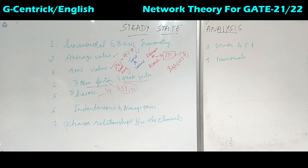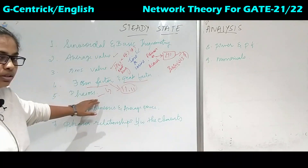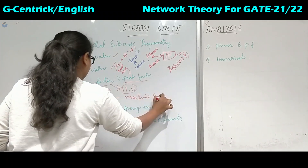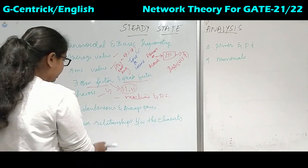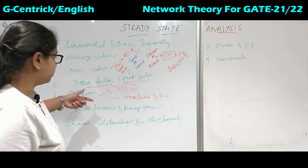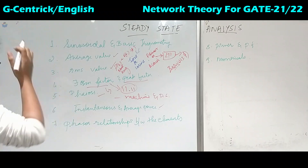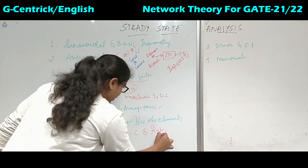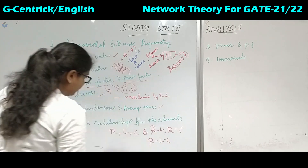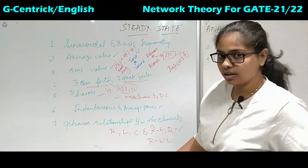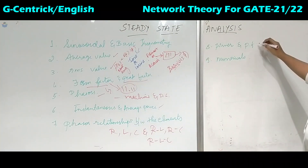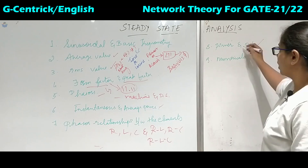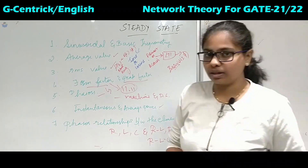The fifth topic is phasors. Once the phasor concept is clear, it will be very helpful for solving problems in machines as well as power systems, because there we will deal with phasors. Next we will see instantaneous and average power — including reactive power, active power, and apparent power. Then we cover the phasor relationship between individual elements — resistors, inductors, capacitors — and their combinations: RL, RC, and RLC, in both series and parallel. After that we have power and power factor, covering reactive power and apparent power. Once all these concepts are learned, we will solve numerical problems based on them.